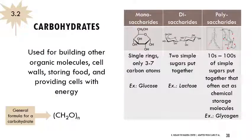First we have carbohydrates. These are very important for building other organic molecules, they form cell walls in certain organisms, they're important for storing food, and they provide an energy source for cells. Monosaccharides are very simple sugars — those monomers, like glucose. Those can get built up into disaccharides (two sugars, like lactose), and when we have much bigger carbohydrates, those are polysaccharides, like glycogen, which are really useful as energy storage molecules. The general formula for a carbohydrate is CH2O, with repeating units indicated by the subscript n.